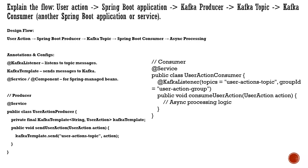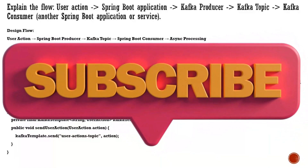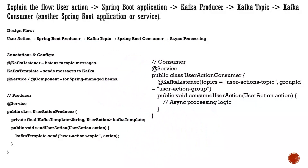There is a configuration annotation you need to use. In order to listen to certain topics you annotate with @KafkaListener. You also have a KafkaTemplate which is used to send the message to Kafka. On the producer side, you can have a KafkaTemplate for sending messages — you provide the topic name and the message or action you want to push.